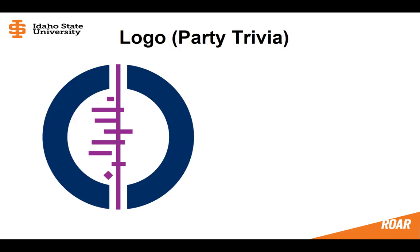This slide is not going to help you search the Cochrane database more effectively, but it will make you very interesting at parties where the topic of systematic reviews comes up. It's also a crash course in reading a diagram known as a forest plot. You see forest plots a lot in systematic reviews and meta-analyses — a forest plot is a nice visual representation of what a statistical aggregation of the studies looks like.